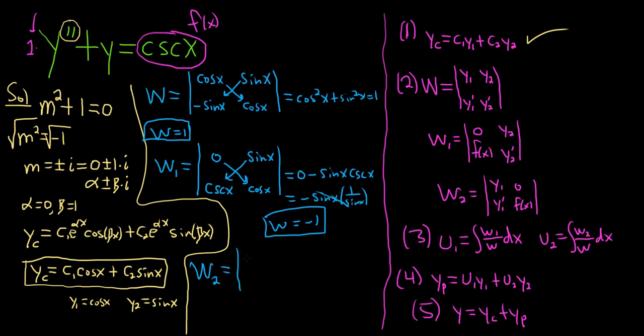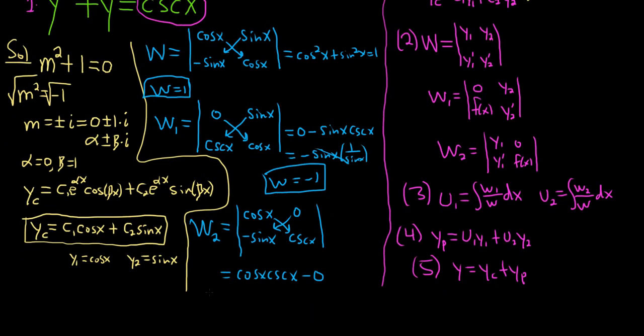W2, same thing, except now we keep the first column, so cosine x, negative sine x. And we replace the second column with 0 f(x), so 0 cosecant x. This will be equal to cosine x, this times this, minus 0. Let's scroll down here. So this is W2, so this is equal to cosine x. Cosecant is 1 over sine. So we just get cosine x over sine x, which is just cotangent x. So W2 is cotangent x. I'm going to write it over here. W2 is cotangent x. And I'm going to put it in a box. So we've accomplished the second step. We have found all of the Ws.